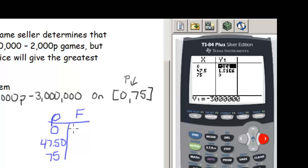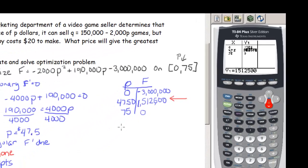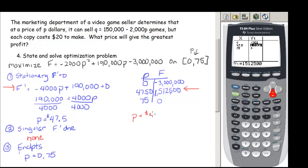So we are going to have a profit of negative 3 million when our price is 0 - so that's a big loss. We have a profit of $1,512,500 when our price is 47.50, and then for 75, we have a profit of 0. So clearly, the maximum profit occurs when our price is $47.50 per game.